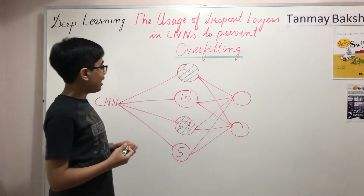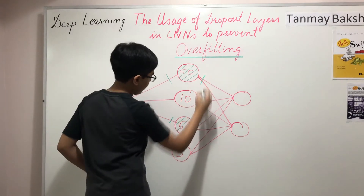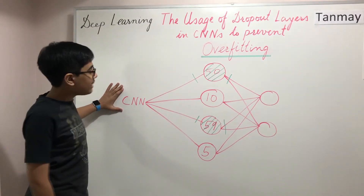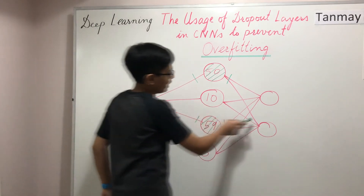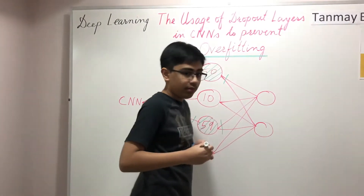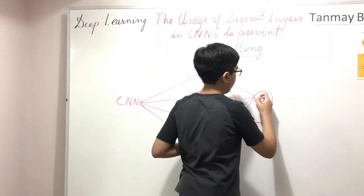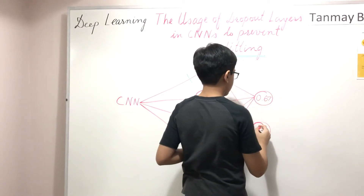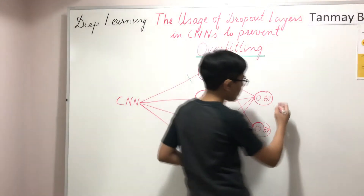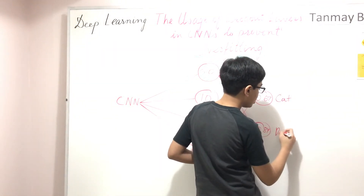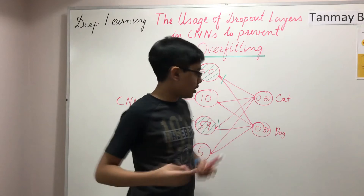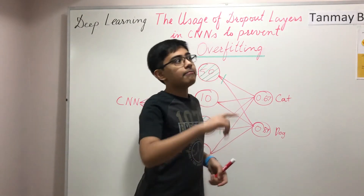So when the CNN provides input to this dense layer, only the active neurons are activated and only those neurons feed into the output layer. Let's say the output gives something like 0.67 for cat and 0.89 for dog — but the problem is that it was actually a cat picture. So it's classifying this cat picture as a dog.